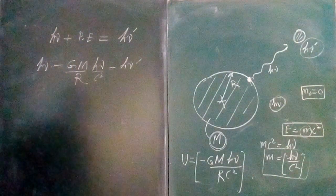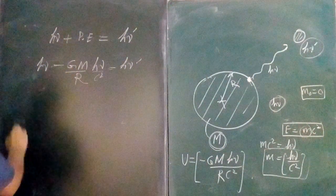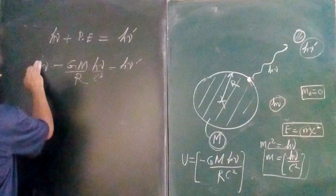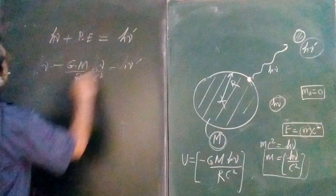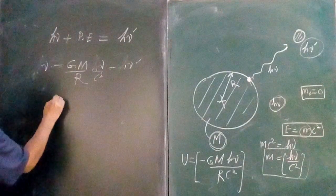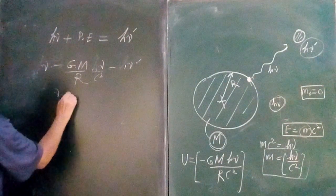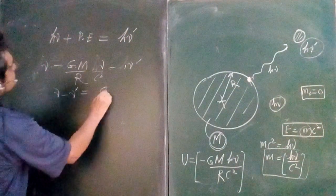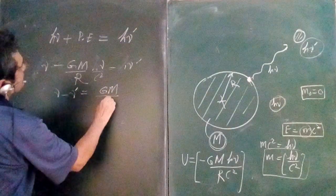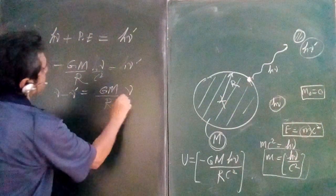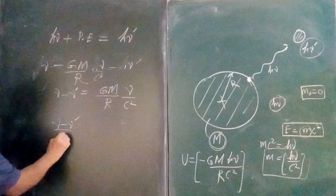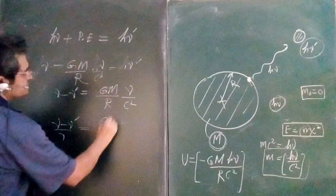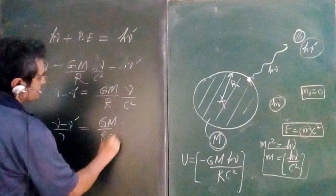So h nu minus nu dash is equal to GM upon r nu upon c², or nu minus nu dash upon nu is equal to GM upon rc².